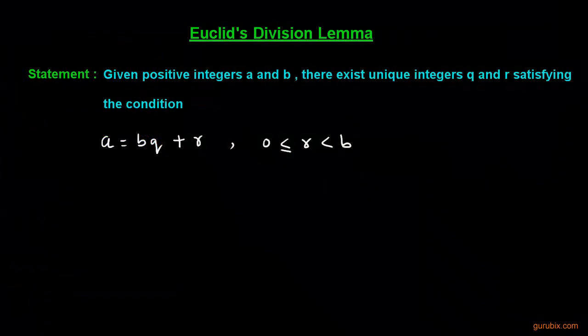Let us understand Euclid's Division Lemma. The statement of this lemma is as follows: Given positive integers a and b, there exist unique integers q and r satisfying the condition that a equals bq plus r, where r is greater than or equal to 0 but less than b.